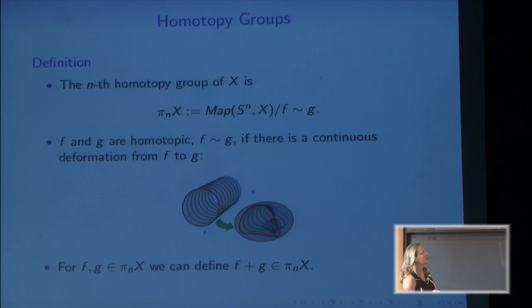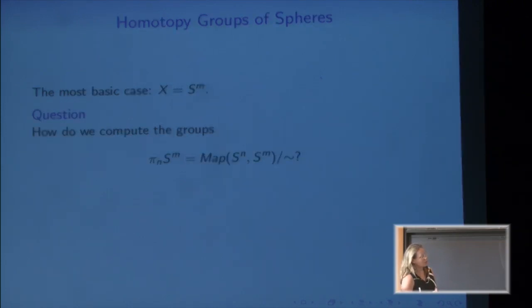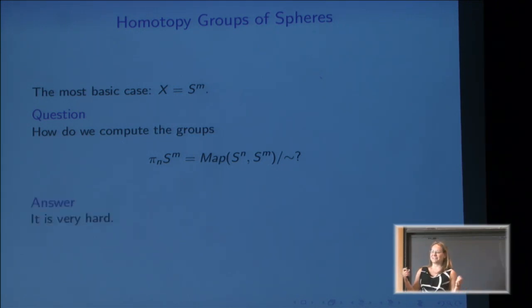One of the basic topological spaces is a sphere of dimension m. The natural question to ask is: can we compute maps between two spheres of different dimension, modulo that equivalence relation? Despite being very easy to state, this question is incredibly hard to answer. We don't have a general method that works for any n and m.